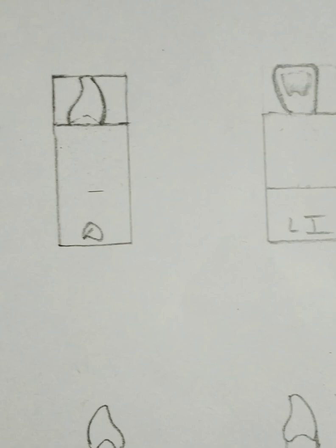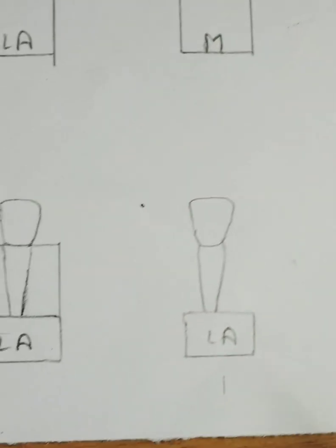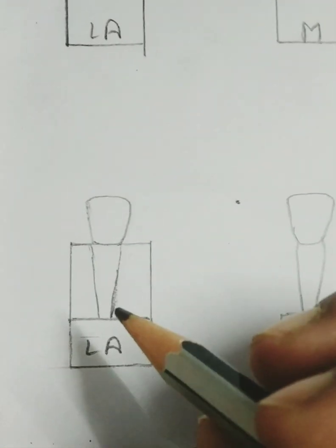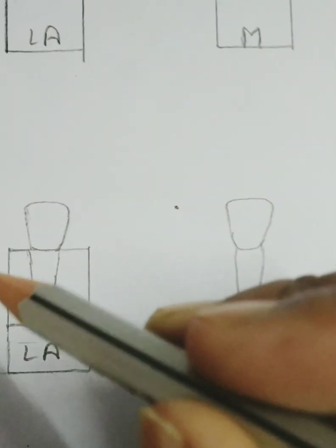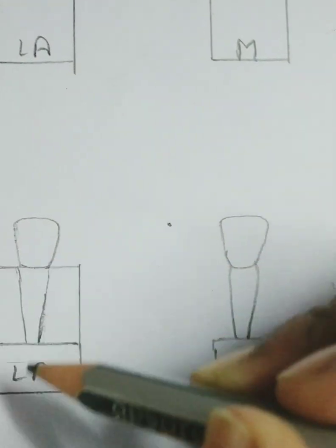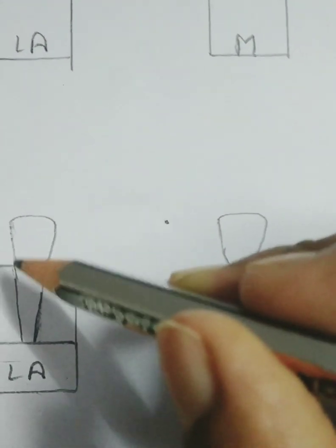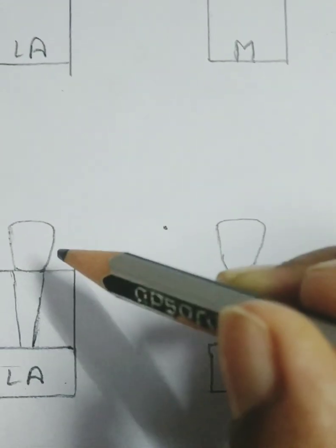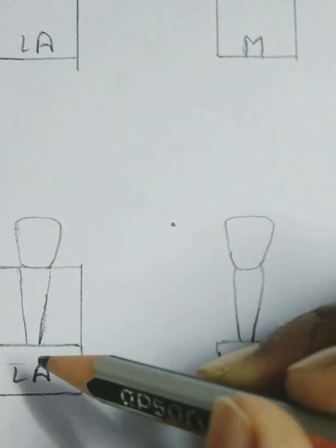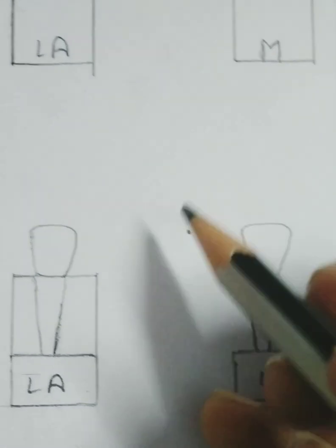Now we have completed the crown part. For the root part, we have to measure 13 mm and draw a conical structure, and remove the excess part.